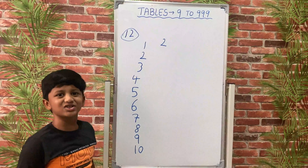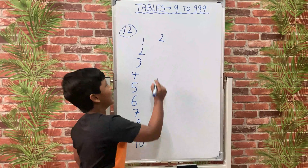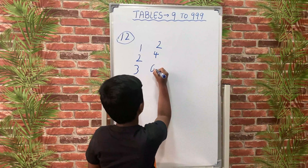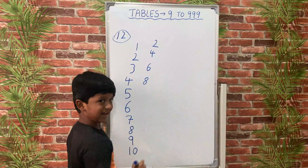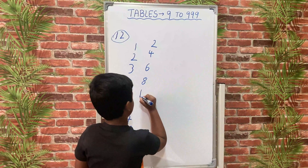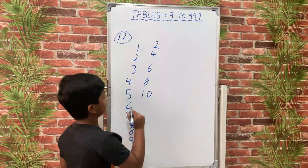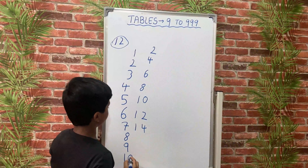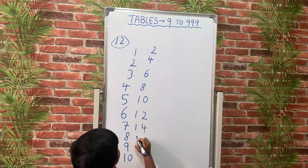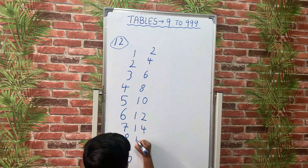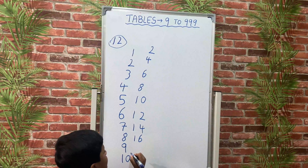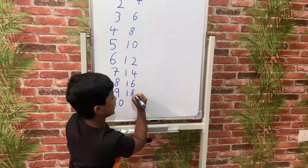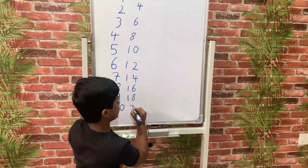Then we will write the next number's table — that is 2. So we will write the 2 times table: 2×1 is 2, 2×2 is 4, 2×3 is 6, 2×4 is 8, 2×5 is 10, 2×6 is 12, 2×7 is 14, 2×8 is 16, 2×9 is 18, and 2×10 is 20.